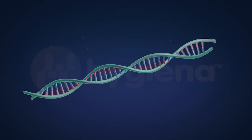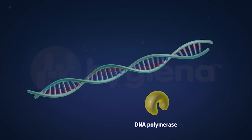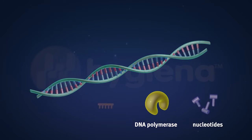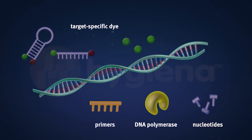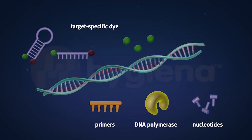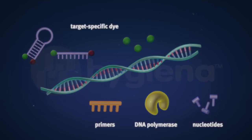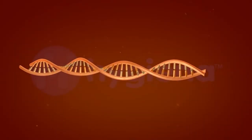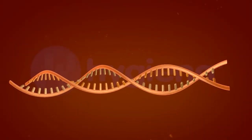The Backsystem accomplishes this with a polymerase chain reaction, or PCR. When the sample DNA is combined with DNA polymerase, nucleotides, primers, and target-specific dye in the Backsystem PCR tablets, this mixture contains everything required for PCR.